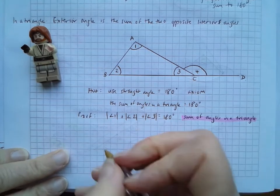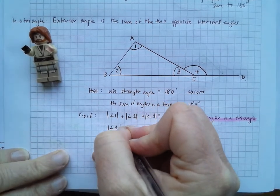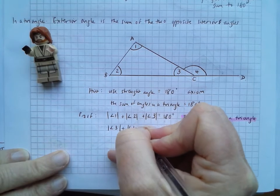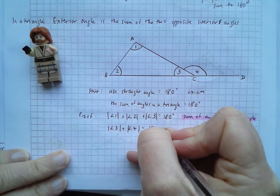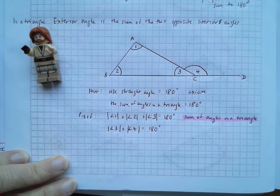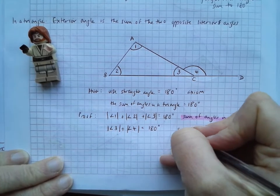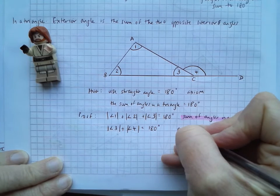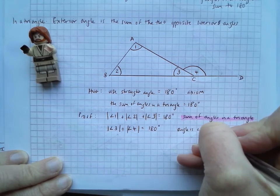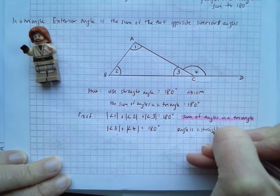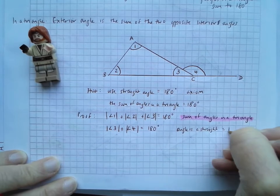What else do we know? We know that angle three plus angle four is equal to 180 degrees. Why is that? We know that's true because the angle is a straight angle equals 180 degrees.